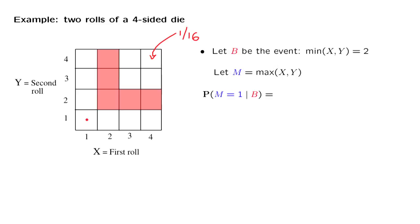Well, this particular outcome cannot happen. If I tell you that the smaller number is 2, then the larger number cannot be equal to 1. So this outcome is impossible, and therefore this conditional probability is equal to 0. So let's do something a little more interesting.